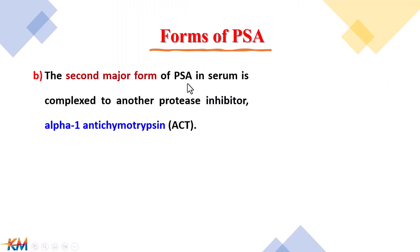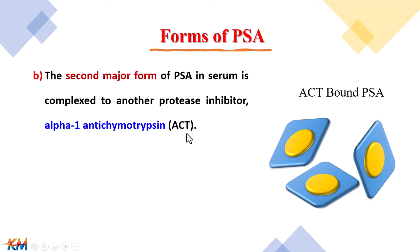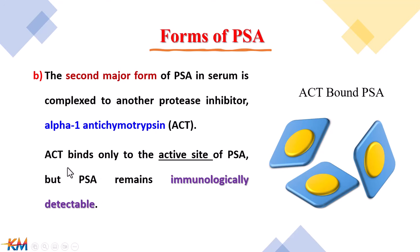The second major form present in serum is PSA bound with alpha-1 anti-chymotrypsin, abbreviated as ACT, and is called ACT-bound PSA. ACT binds only to the active site of PSA, but other antigenic sites are not covered, so that this form of PSA remains immunologically detectable. It can be detected by antibodies in ELISA tests.